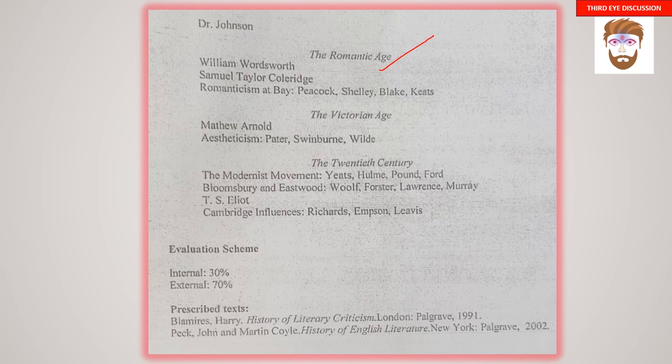Unit 5 — Unit 2 in the History of Literary Criticism book — covers the 18th to 20th century. The 18th century: Joseph Addison, 'The Battle of Books' by Swift, Alexander Pope, Dr. Johnson. The Romantic Age: William Wordsworth, Samuel Taylor Coleridge, romanticism, Peacock, Shelley, Blake, Keats. The Victorian Age: Matthew Arnold, aestheticism, Pater, Swinburne, Wilde. The 20th century: the modernist movement, T.S. Eliot, Ezra Pound, the Bloomsbury Group, Virginia Woolf, D.H. Lawrence, Cambridge influences — Richards, Empson, Leavis.